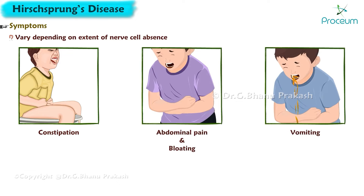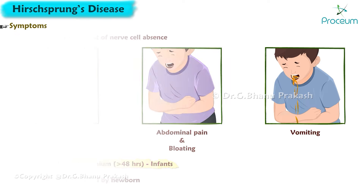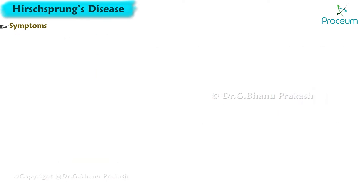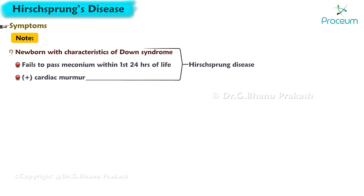Infants with the disease may also experience delayed passage of meconium — more than 48 hours — which is the first stool passed by a newborn. A newborn with characteristics of Down syndrome who fails to pass meconium within the first 24 hours of life and exhibits a cardiac murmur is likely suffering from Hirschsprung's disease.